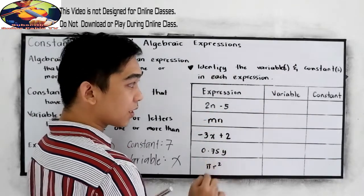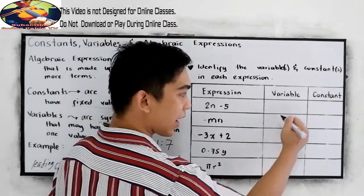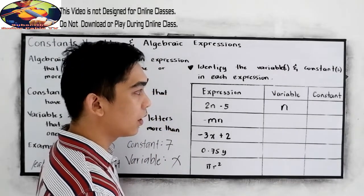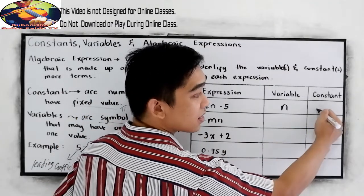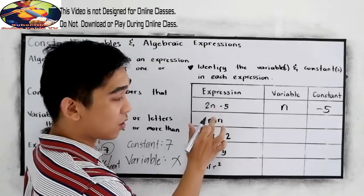Our variable is, so we have a letter, which is n. And for the constant, our constant is negative 5. Include the sign of our constant.